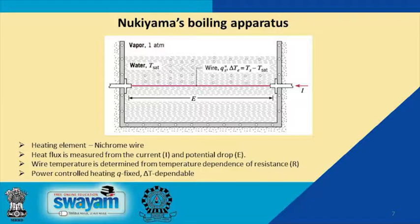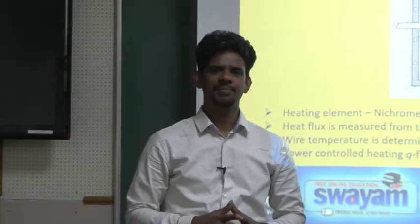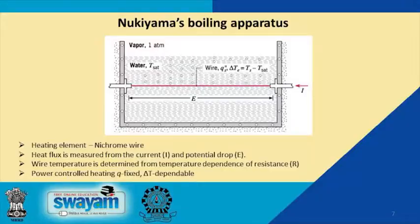Boiling was studied by Nukiyama using a simple apparatus: a pool of liquid with a nichrome metal wire introduced into it, with a potential applied across the wire and externally controlled. By applying a known potential and measuring the current, the heat flux input could be controlled. The temperature of the wire was measured using the relationship between resistivity and current. This allows control of power input and observation of how the wire temperature changes during boiling.